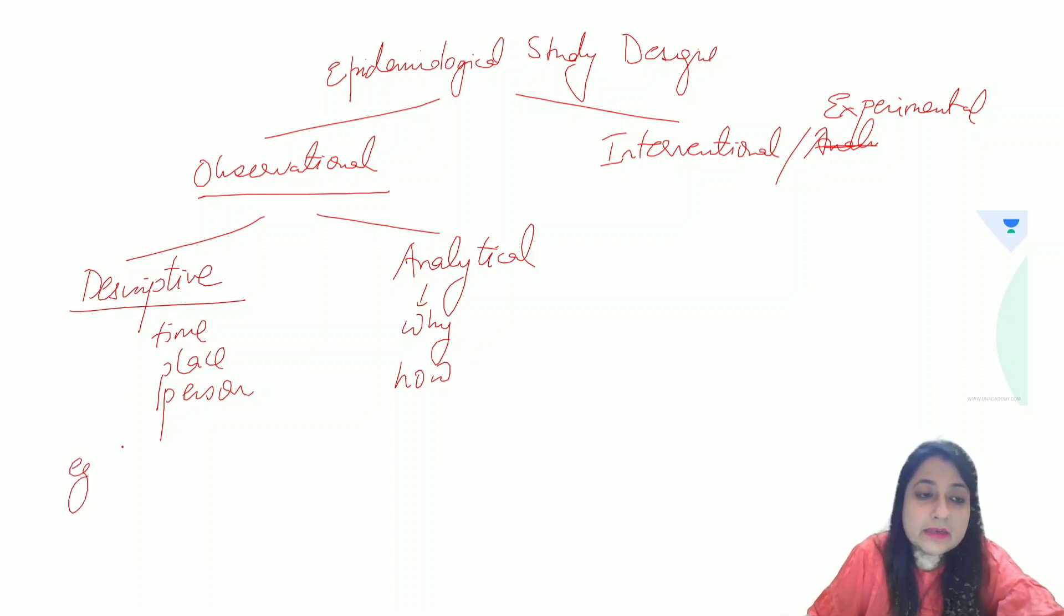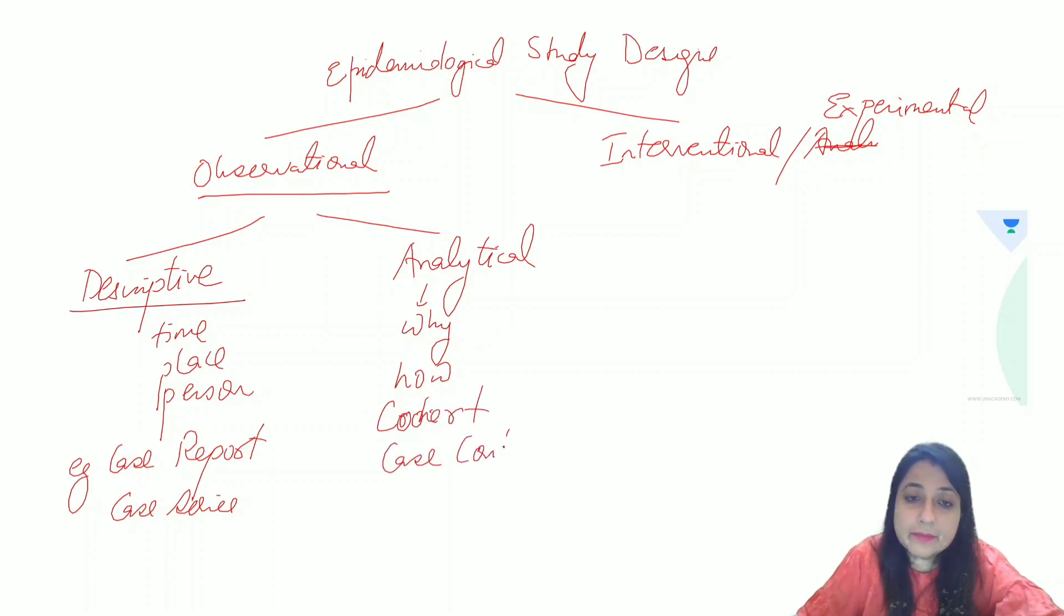Example of descriptive study design is, this can also come as an MCQ, case report and case series. An example of analytical study design is cohort study, case control study, cross-sectional study and ecological study design.